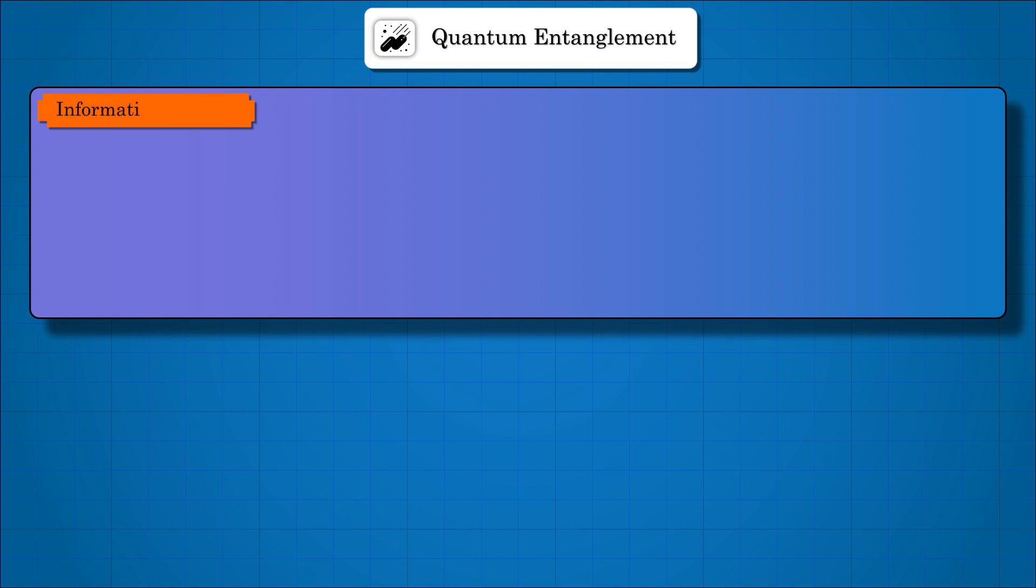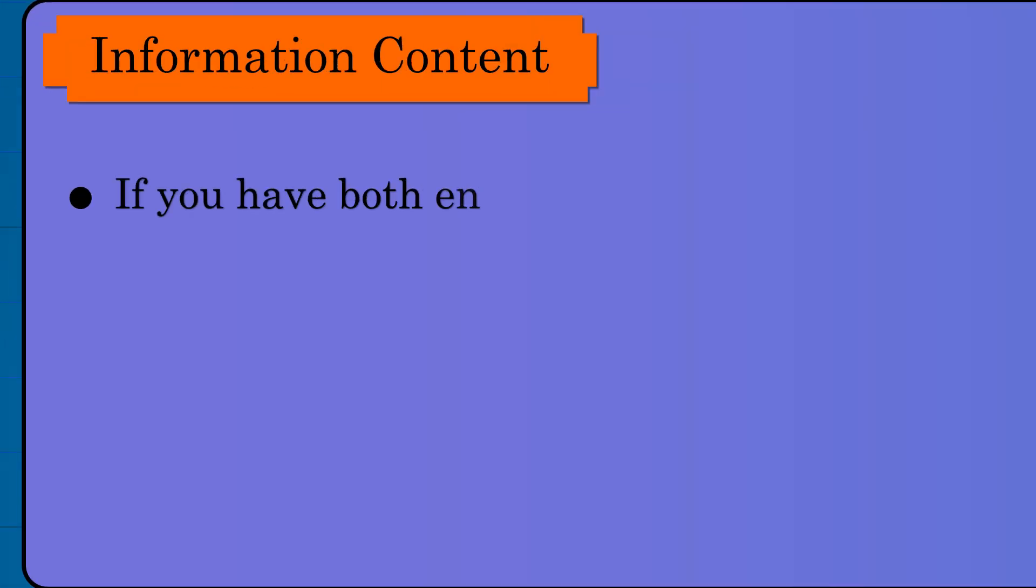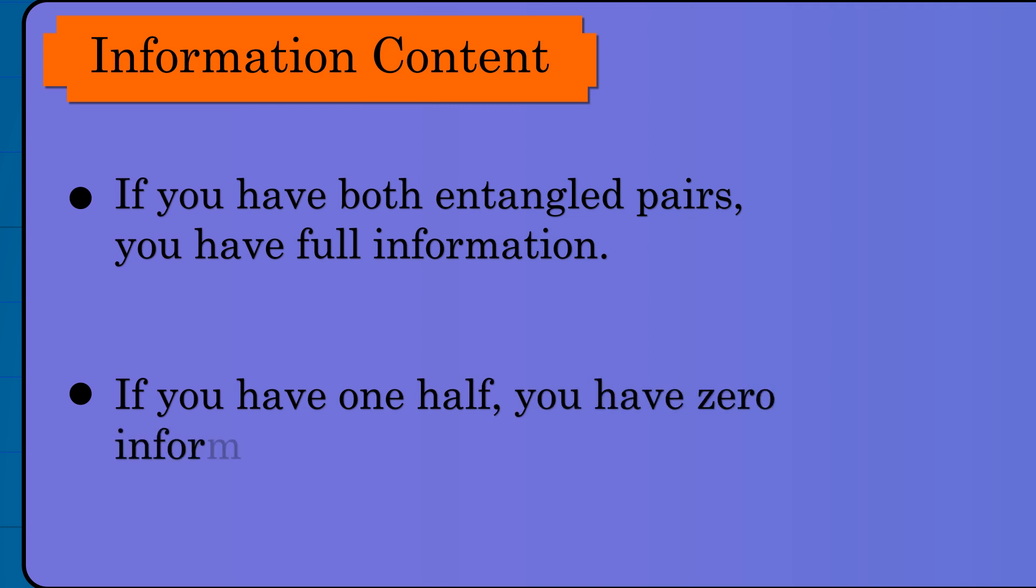When two particles are entangled, having just one particle gives you zero information about the overall state. However, you gain complete information about the system if you have both particles.